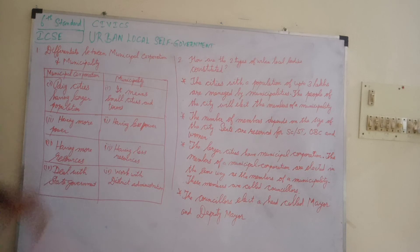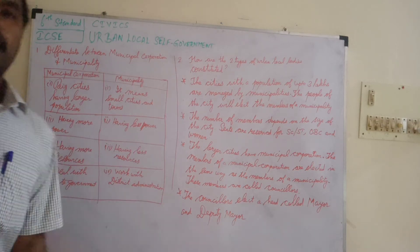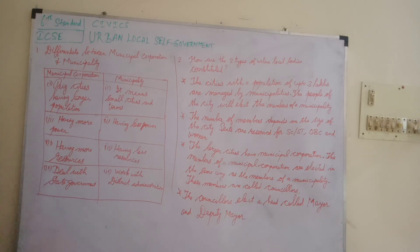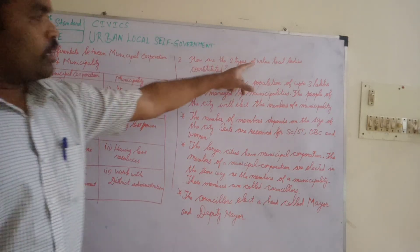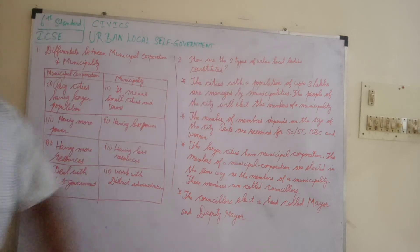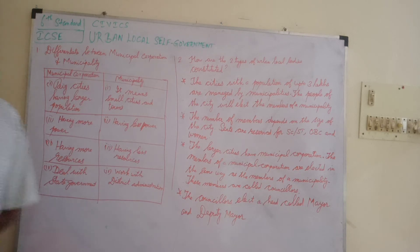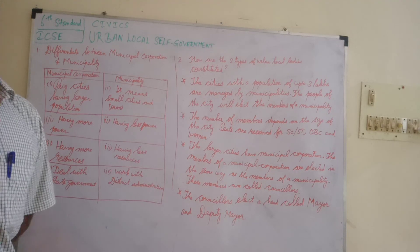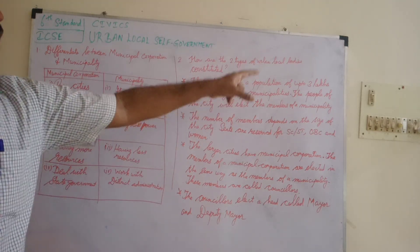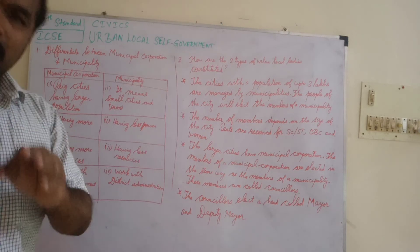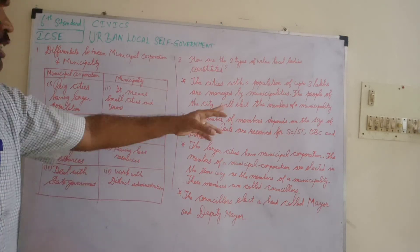Municipal corporation deals with the state government, whereas municipality works with the district administration. This is the difference between municipal corporation and municipality. The next question is: how are the two types of urban local bodies constituted? These are mainly municipalities and municipal corporations.